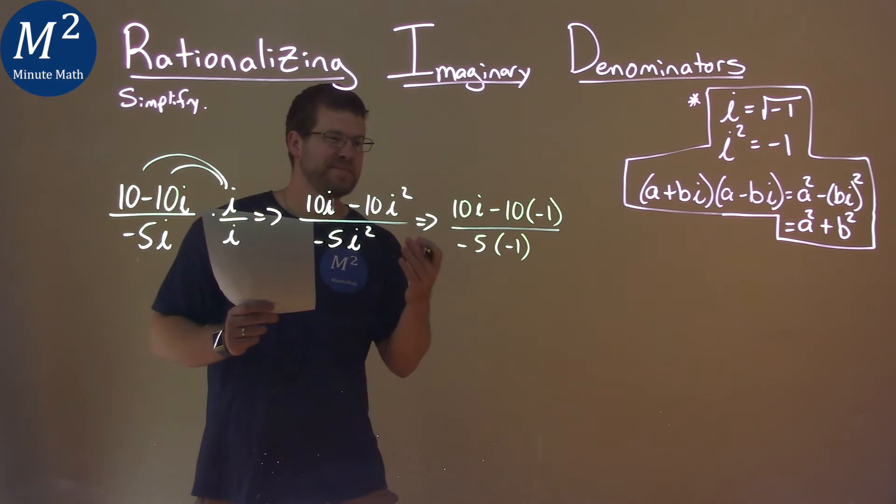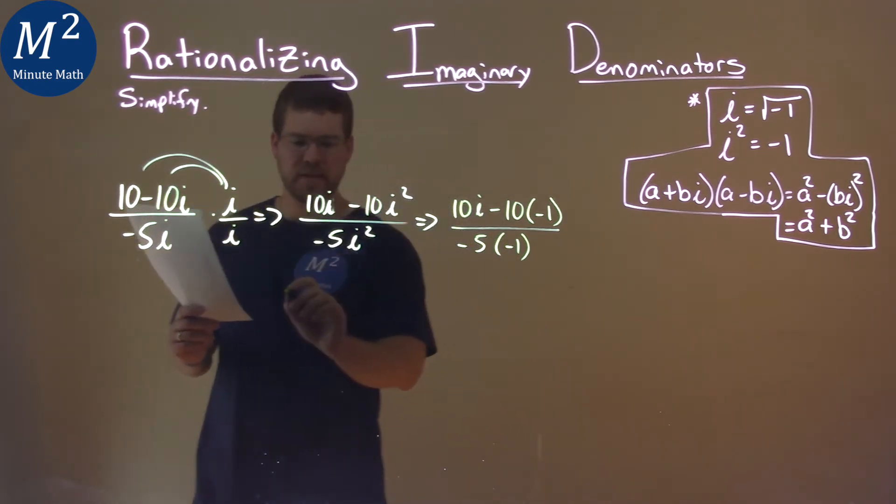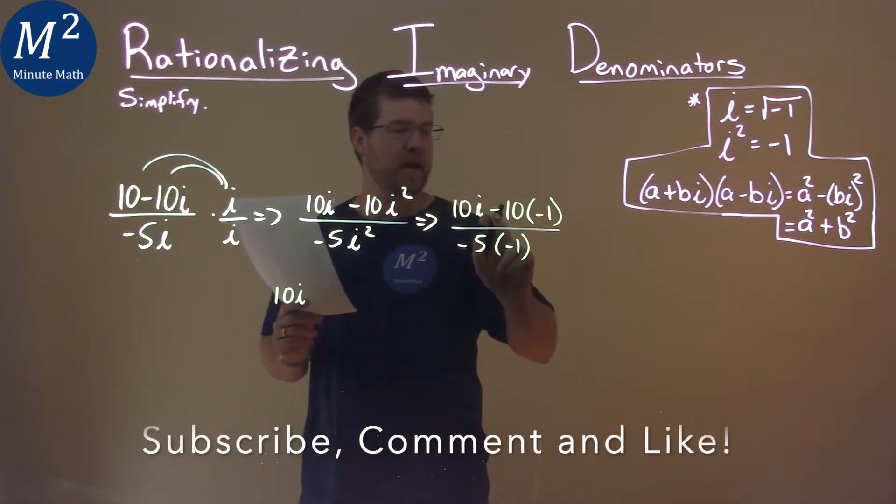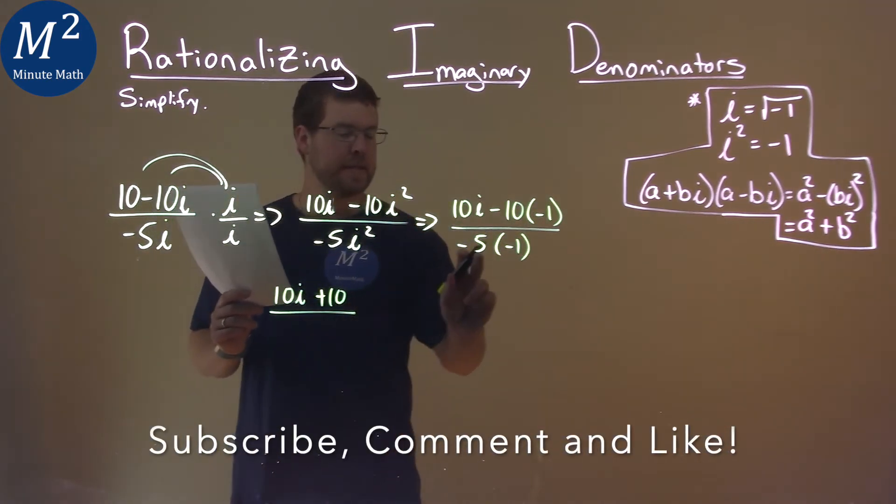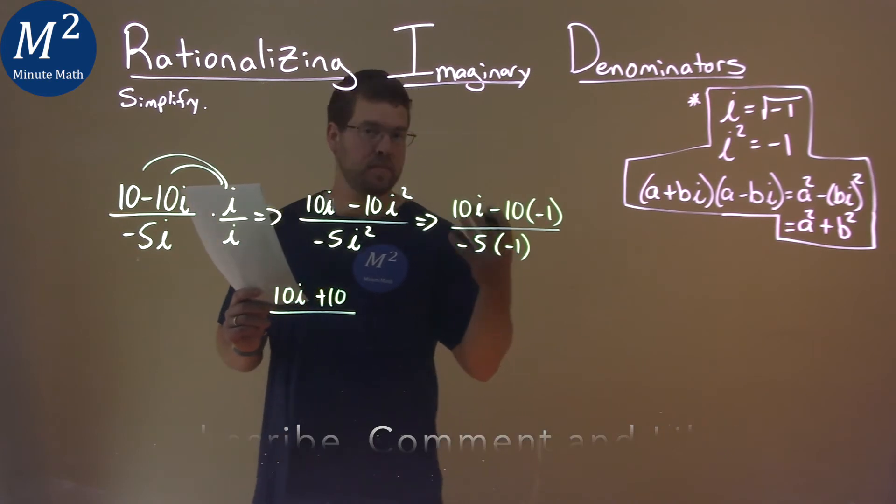Where can we go from here now? 10i just stays here. Then, negative 10 times negative 1 is a positive 10. Over, negative 5 times negative 1 is a positive 5.